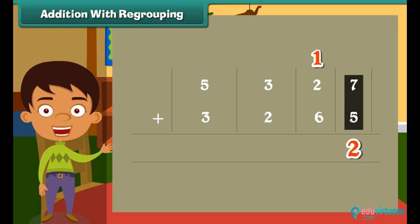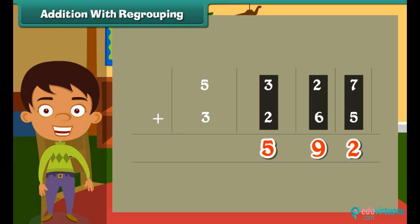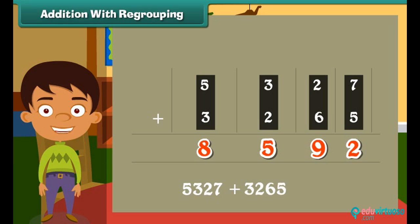Next we move to add the tens. 2 plus 6 plus 1 is equal to 9. Write 9 below in the tens line. Now we add hundreds. 3 plus 2 is 5. Write 5 below in the hundreds line. Similarly add thousands. We get the answer as 8. Therefore addition of 5327 and 3265 is equal to 8592.